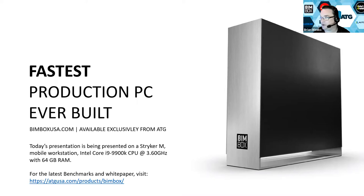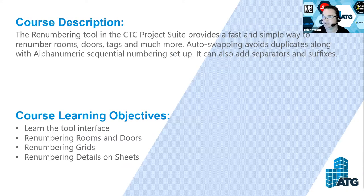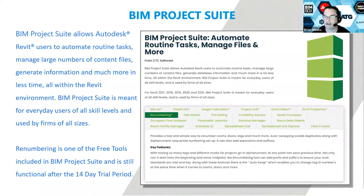Today we're talking about the renumbering tool in CTC Project Suite — downloadable software that plugs into Revit. It's a simple way to renumber rooms, doors, tags, and more. The BIM Project Suite has 22 total tools; seven of those are free tools. Even after the 14-day trial expires, those seven tools are still free and usable as long as the software is installed.